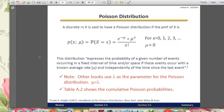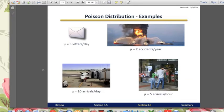So as we can see in this formula, mu is the average rate, and x is the number of events occurring in a fixed interval, and mu has to be greater than 0. So mu can be like 3 letters in a day or like 5 arrivals an hour.